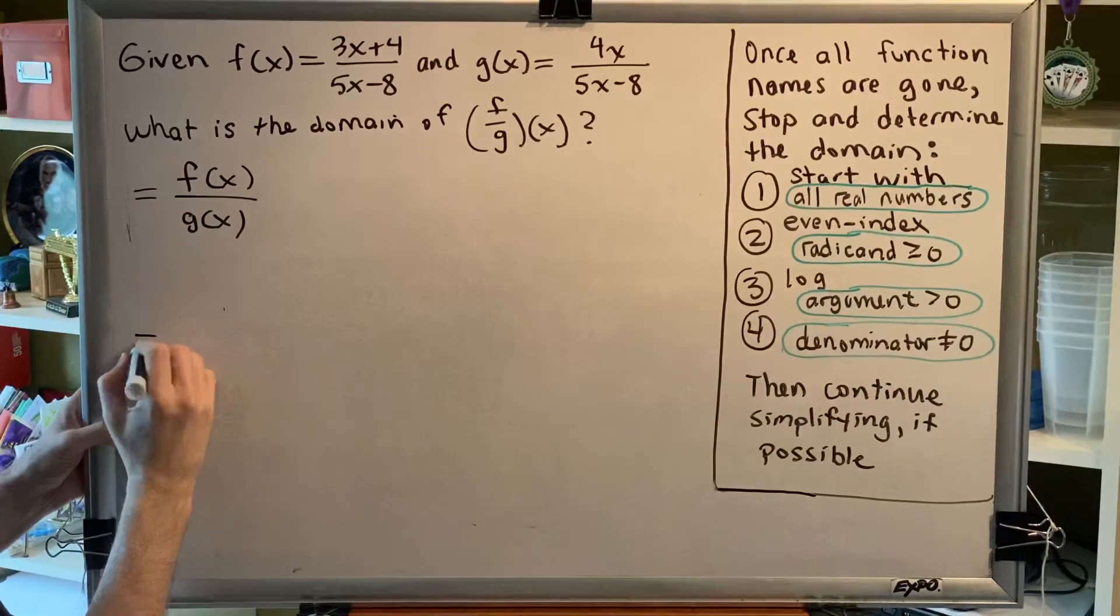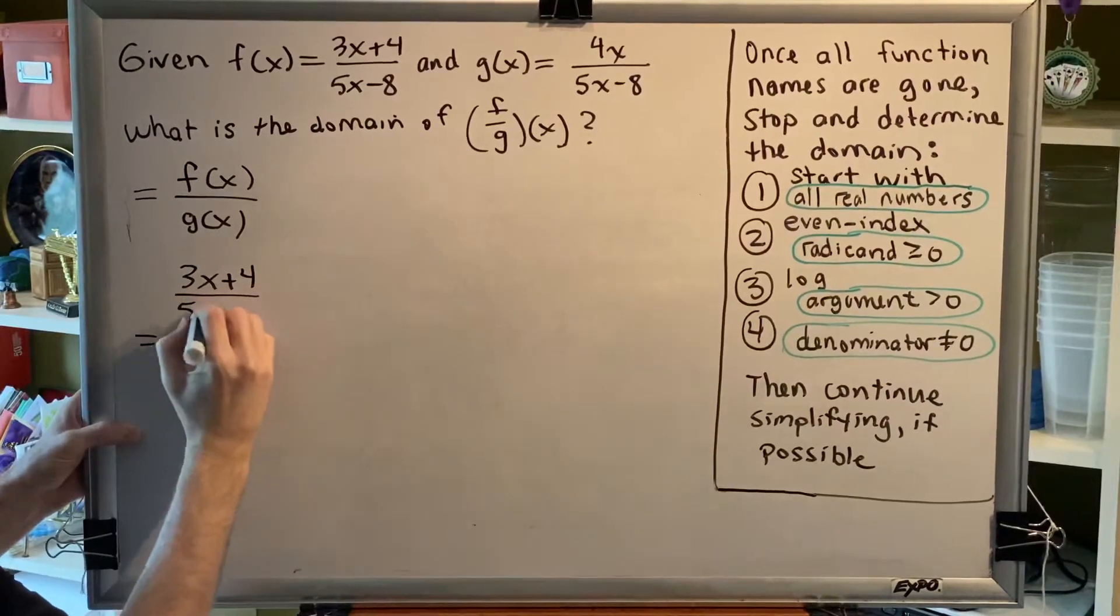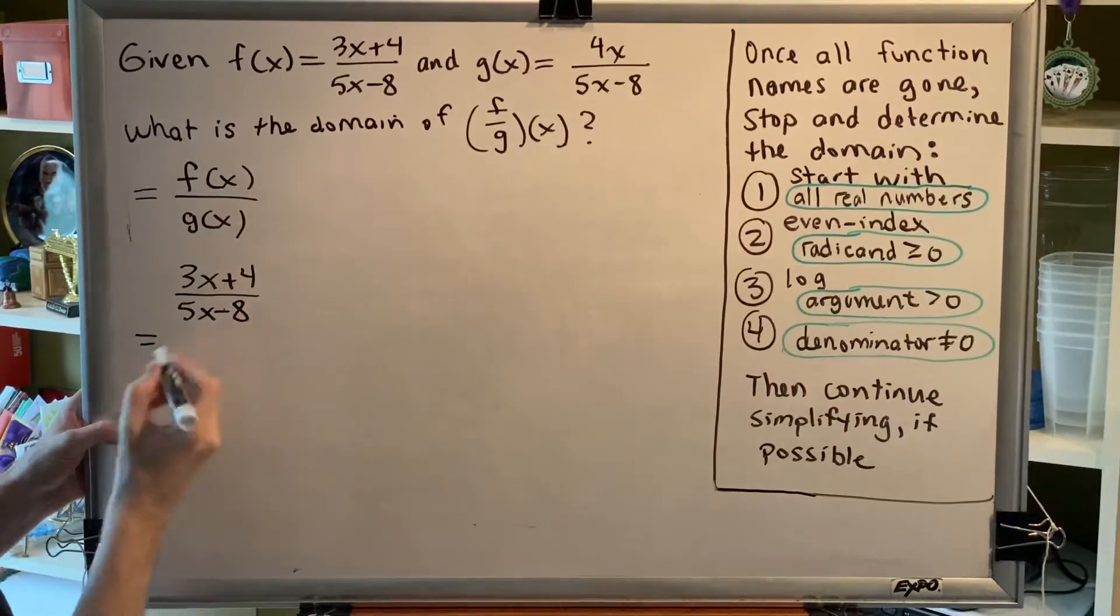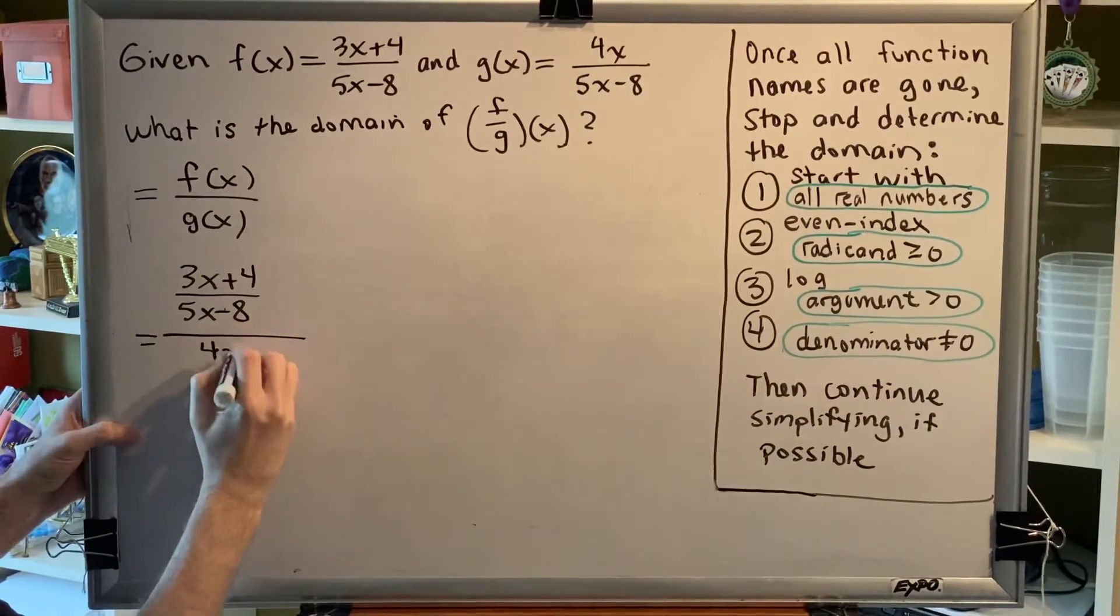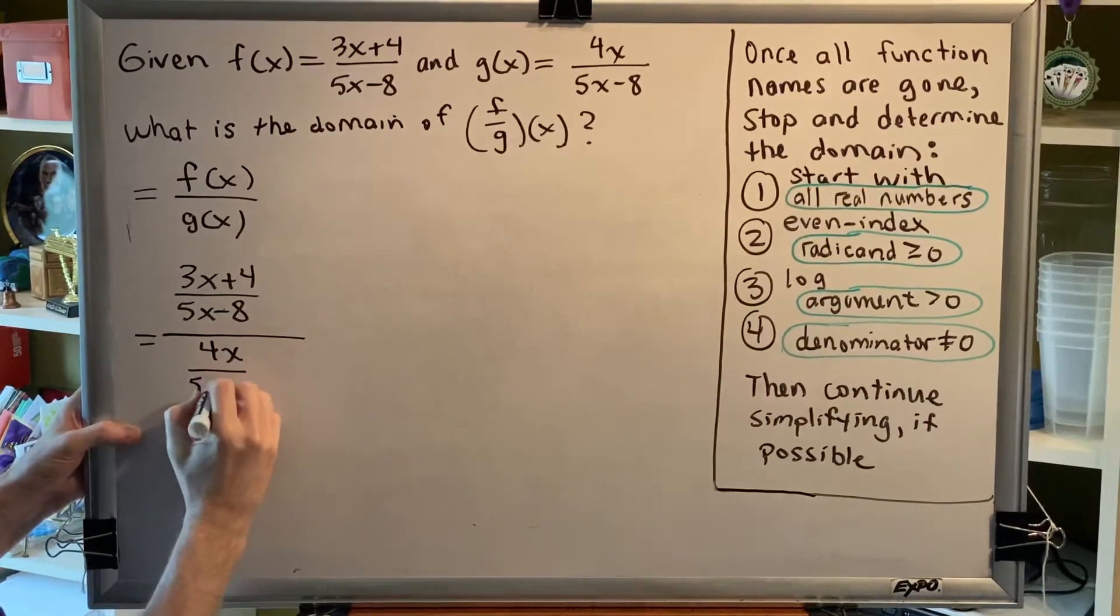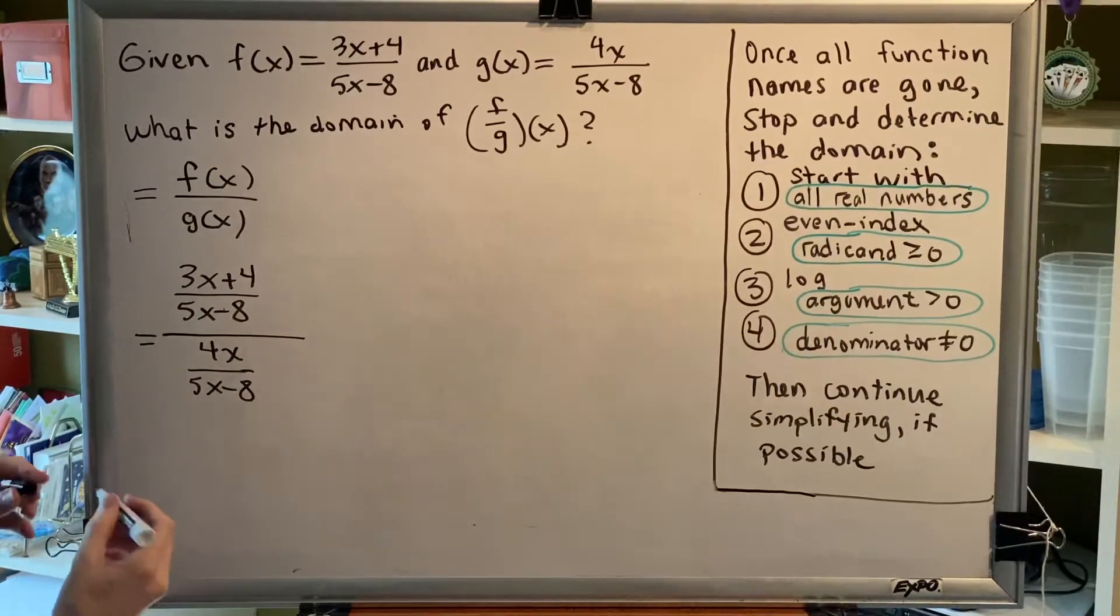We're going to have 3x plus 4 over 5x minus 8, that's f of x, divided by 4x over 5x minus 8, which is g of x.